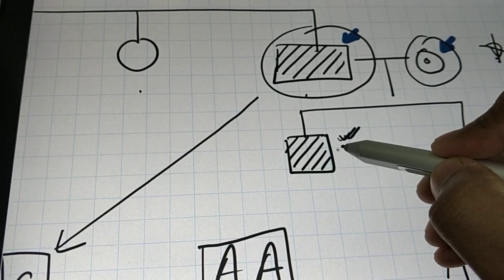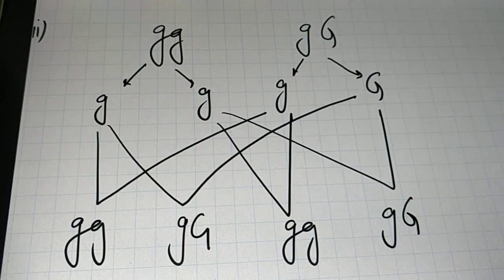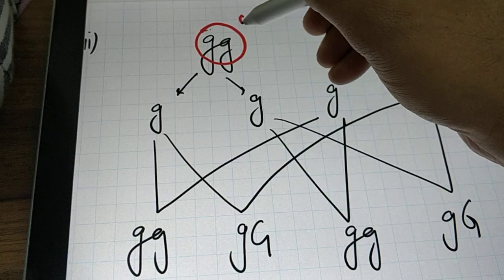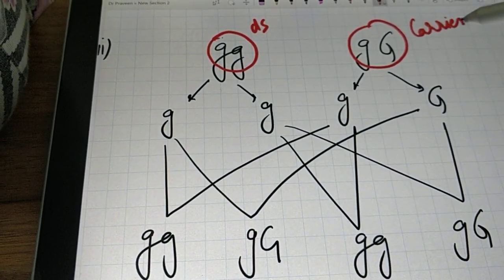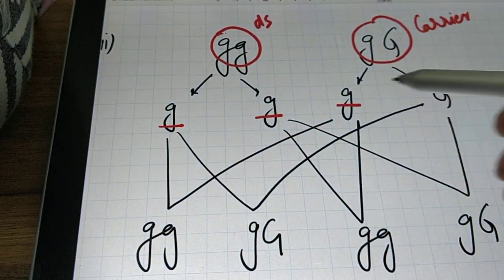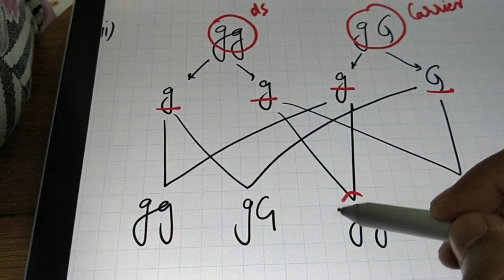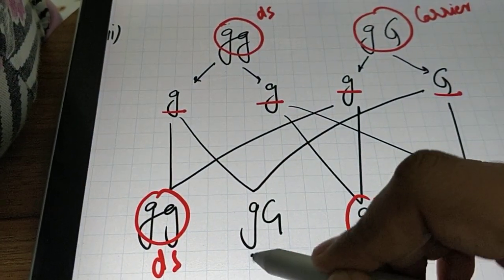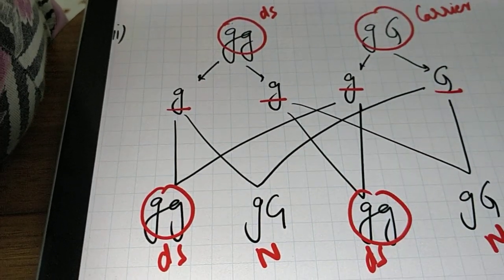Therefore I consider a second scenario possible in the recessive condition: one parent is diseased (small g, small g) and one parent is a carrier (small g, capital G), as given in the question. Separating the alleles, you get 50% of children who are diseased (small g, small g) and 50% who are normal carriers (small g, capital G).